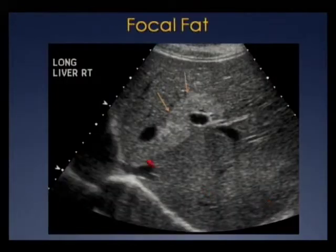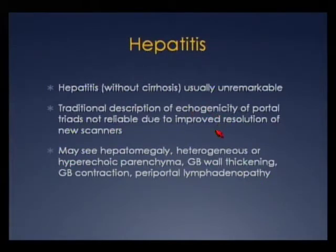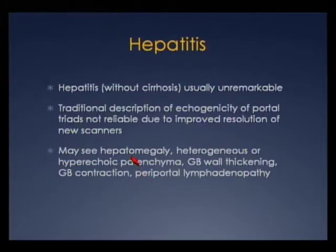Here's a nice example of focal fat where we see an echogenic focus draping around the vasculature of the liver without displacing the vessels. Hepatitis without cirrhosis is usually unremarkable by ultrasound. The traditional description of echogenic portal triads doesn't hold true anymore with modern machines. But you may see hepatomegaly, heterogeneous liver parenchyma, gallbladder wall thickening or contraction, and periportal adenopathy.